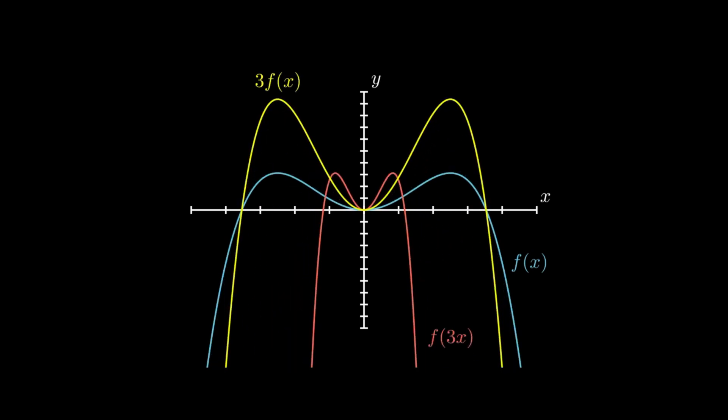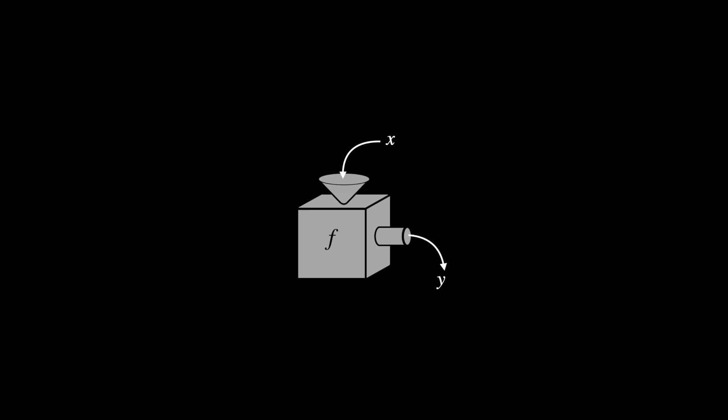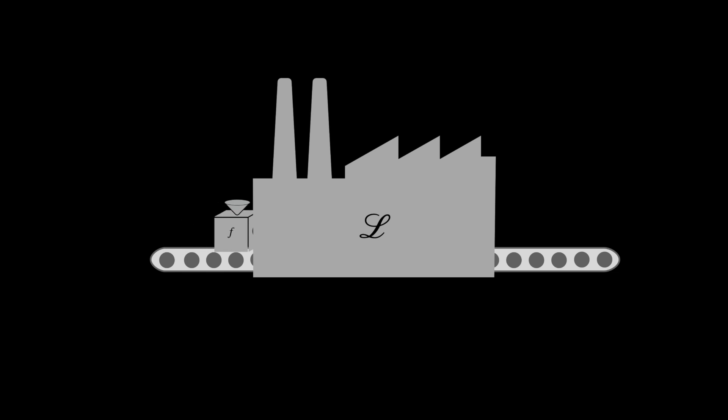Okay, so that lays the groundwork for a more abstract topic, which is operators. So just as functions take numbers and output other numbers, operators take functions and output other functions. In the function machine analogy, you could think about an operator factory that takes in function machines and puts out different function machines. We often write these as curly letters like big L here.